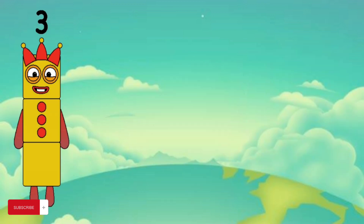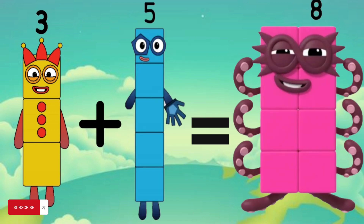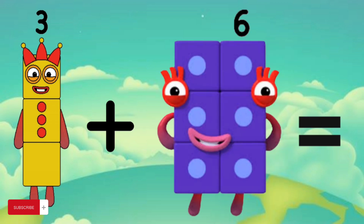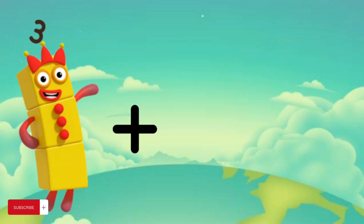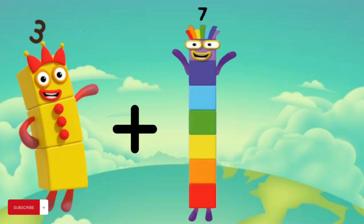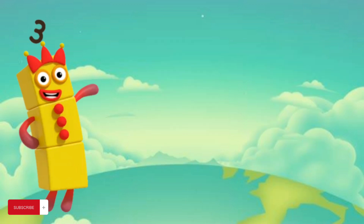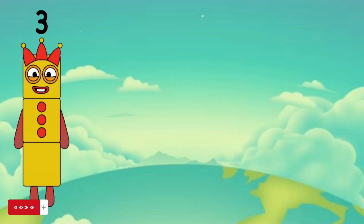Three plus five equals seven. Three plus seven equals ten. Three plus eight equals eleven. Three plus nine.